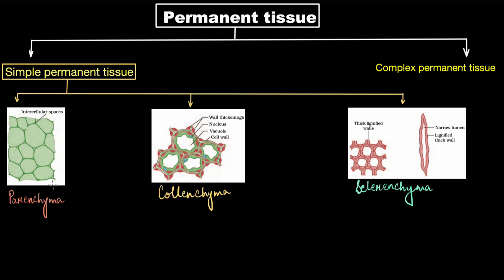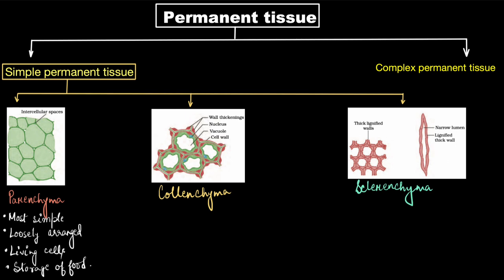The most abundant of the simple permanent tissues is parenchyma, also called the filler tissue — if a plant needs to fill up any area in the plant body, it is mostly parenchymatous tissue. These are living cells with a very thin cell wall and are loosely arranged, with visible intercellular spaces between the cells. They are mainly responsible for storage of food.